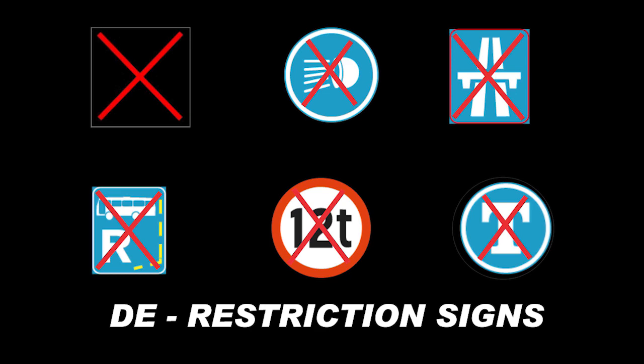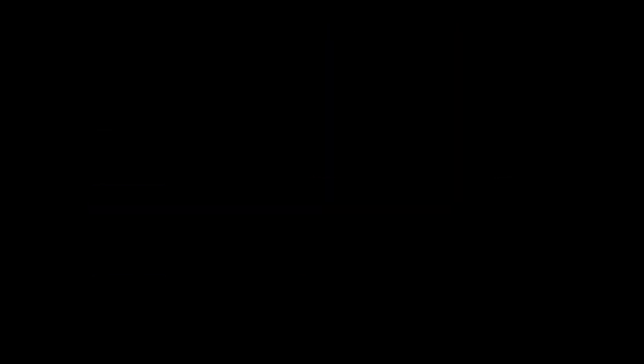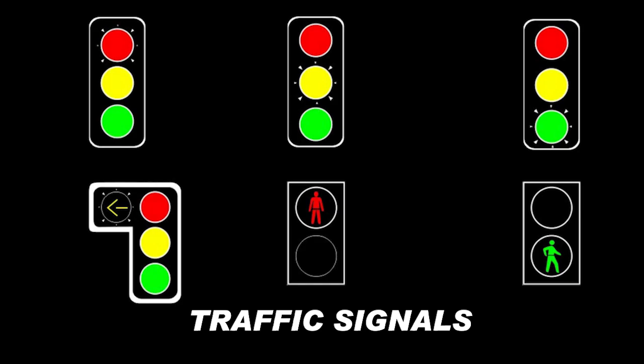Signal signs are usually traffic signals or robots, hand signals, flashing lights on roads, or police officers directing traffic ahead. These signs must be obeyed as they also control the movement and flow of traffic.